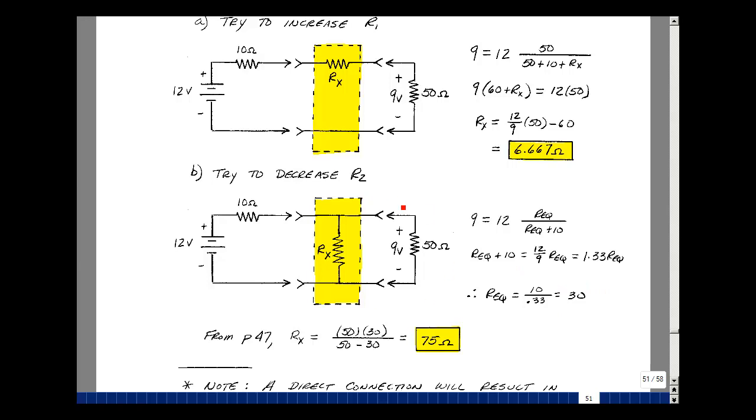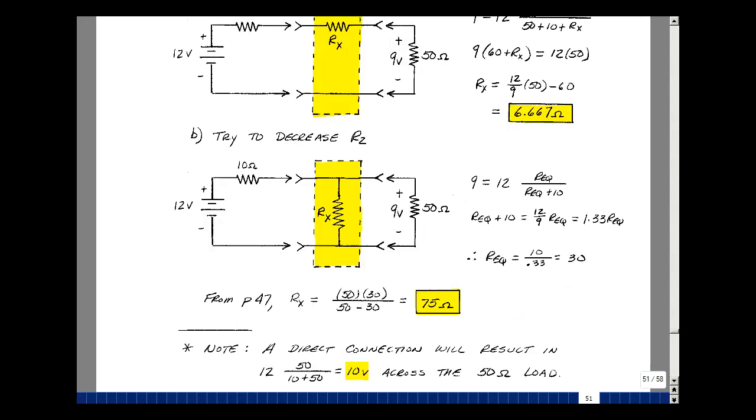Now is it possible to put something in parallel with 50 and get 30? Well the answer is yes. Remember in our parallel combinations the parallel combination is smaller than the smallest resistor that you're putting in parallel.